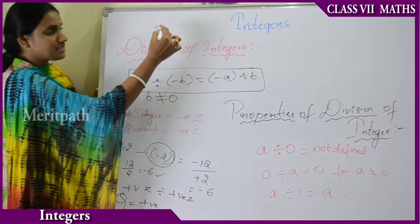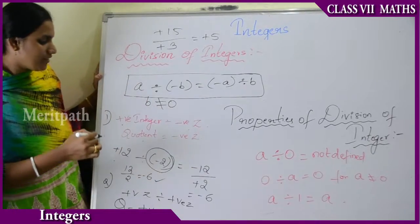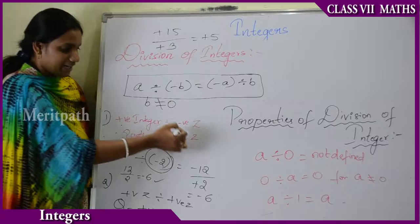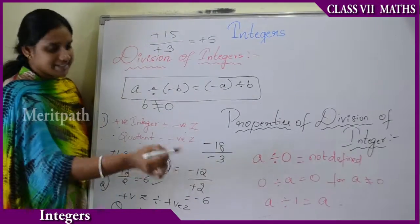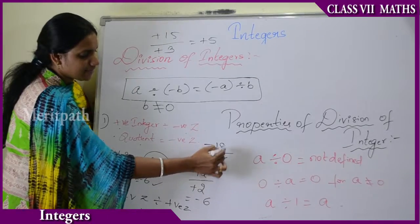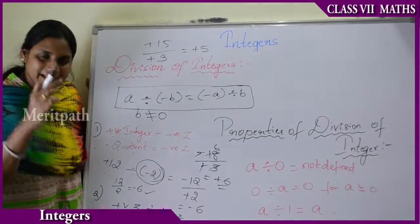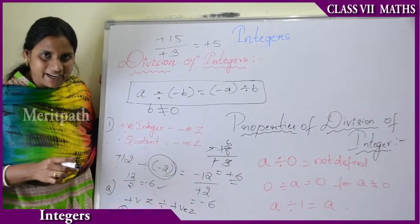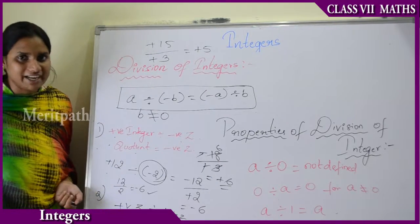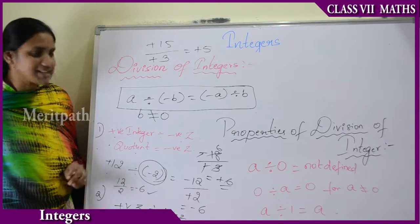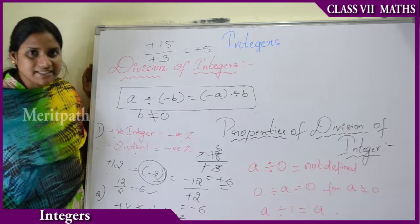When a positive integer is divided by a positive integer, the quotient is positive. For example, plus 15 divided by plus 3 equals plus 5. When a negative integer is divided by a negative integer, for example minus 18 divided by minus 3, the negatives cancel and we get a positive integer. So integers with the same sign give a positive quotient, and integers with opposite signs give a negative quotient.